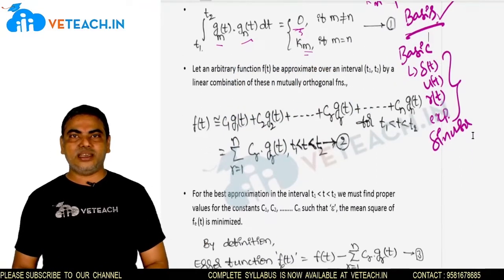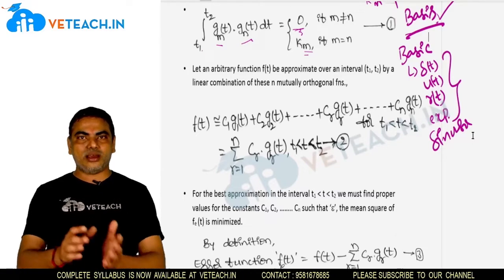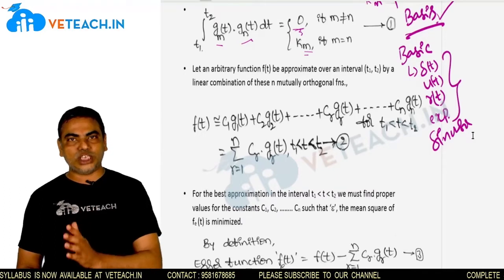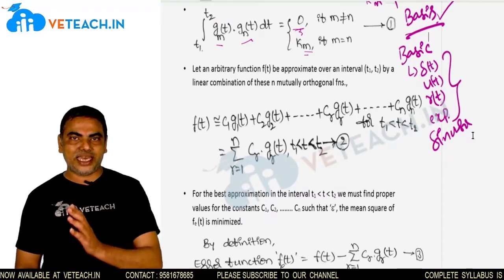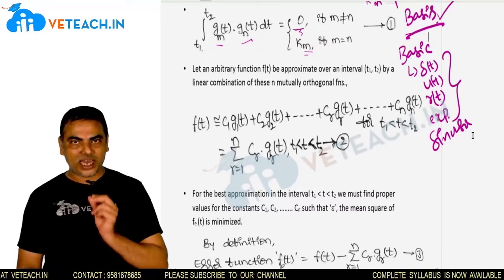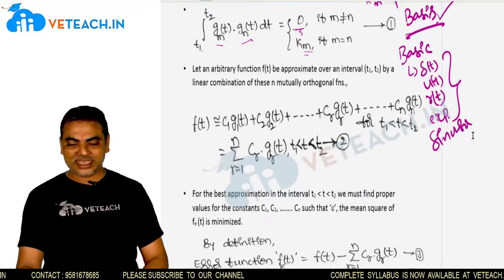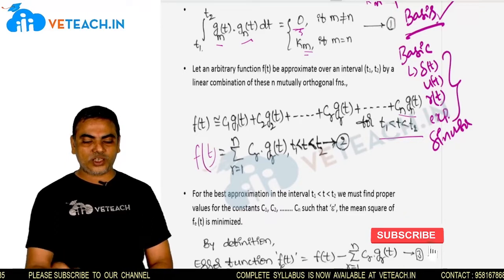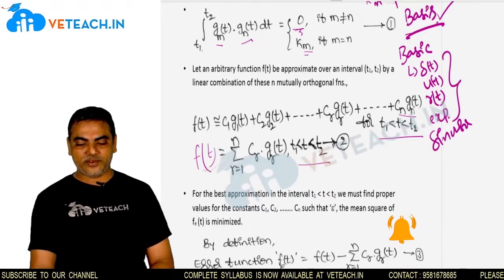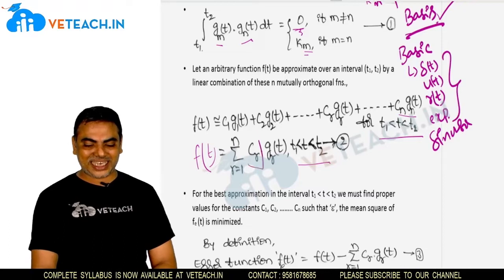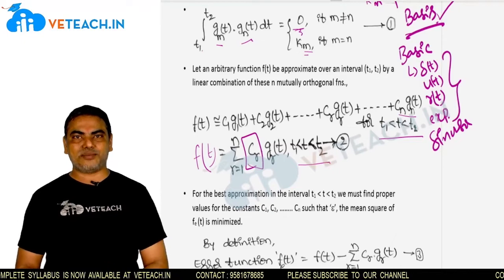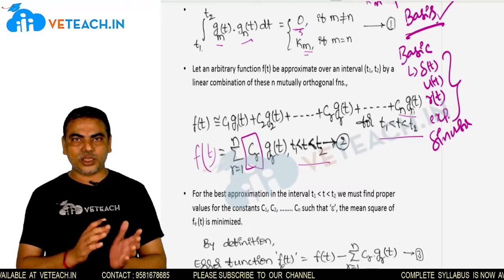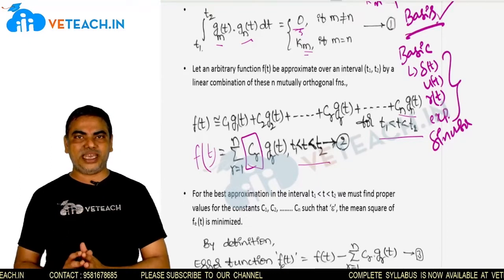Now let us see the approximation of any other function f(t) with its components along these n number of orthogonal functions. The component along g1 is c1, along g2 is c2, and so on, the component along gn is cn. Then we can write f(t) = c1·g1(t) + c2·g2(t) + ... + cn·gn(t), or in short form: f(t) = Σ(r=1 to n) cr·gr(t) over the interval t1 to t2. The criteria is the selection of the coefficients cr such that the mean square error is minimum.